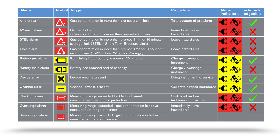If the measured value falls into the negative range, a so-called underrange alarm is triggered. This situation can occur, for example, if a fresh air calibration has been carried out in an area within which concentrations were already present. Please carry out a fresh air calibration in an area where fresh air prevails.